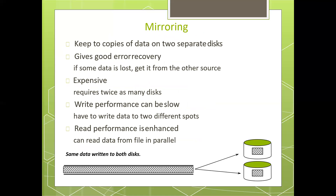There are two main concepts in RAID. The first is mirroring — keeping copies of data on two separate discs. That gives good error recovery; if data is lost, you can get it from the other source. It is expensive because it requires twice as many discs. Write performance can be slow because data must be written in two different spots. Read performance is enhanced because data can be read from files in parallel.